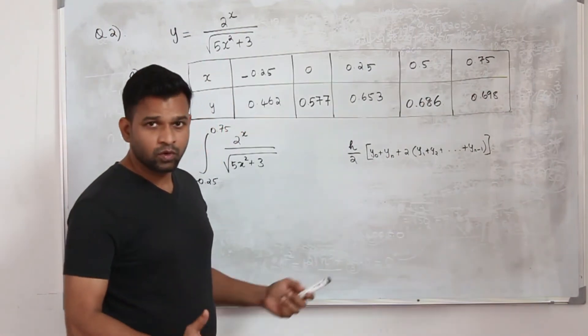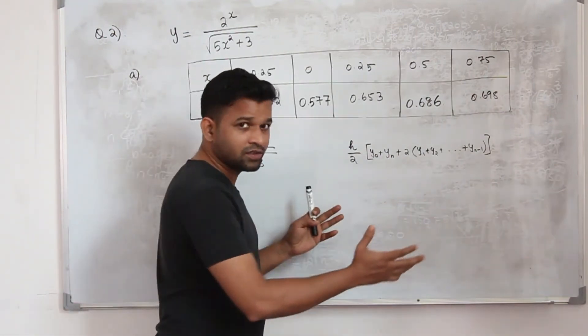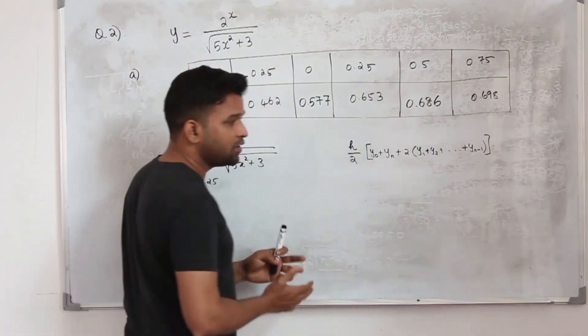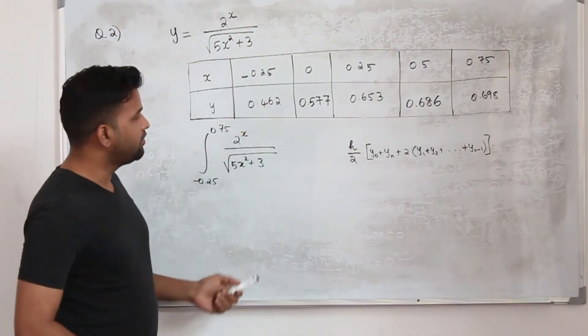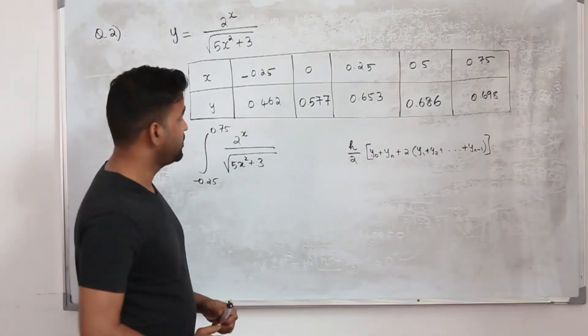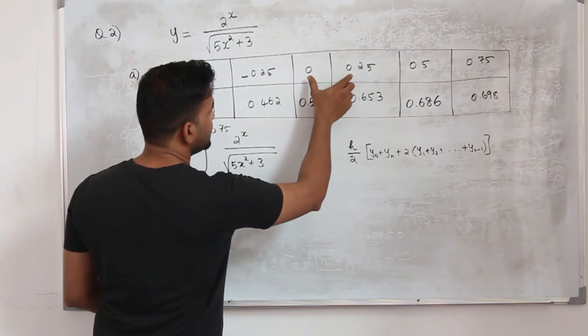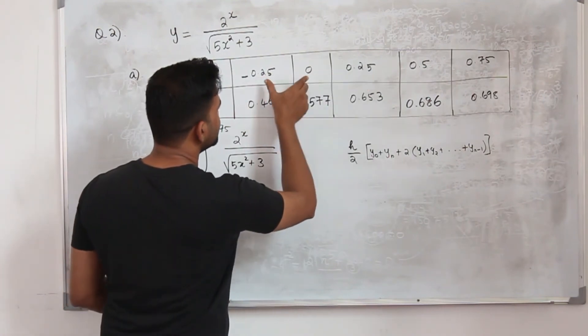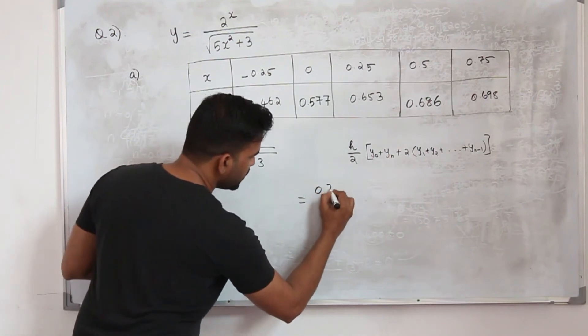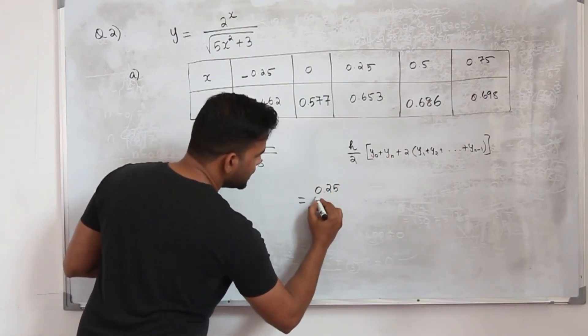So this is the trapezium rule. You don't need to memorize this rule in case you forget it in between, that's completely fine. The h is the width of each stripe, or in other words, the difference here. The common difference you can see is 0.25, right? So that's your h, 0.25 divided by 2.